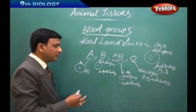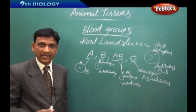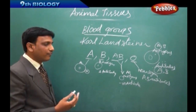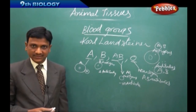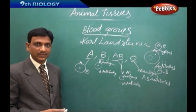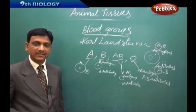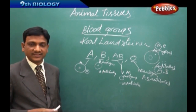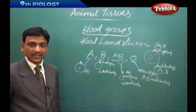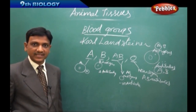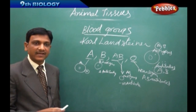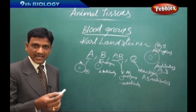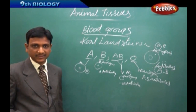How do we know what blood group someone is? We go for a blood test to identify the blood group. Doctors perform a blood test before surgery because in case of heavy bleeding and blood loss, the patient has to be administered blood.